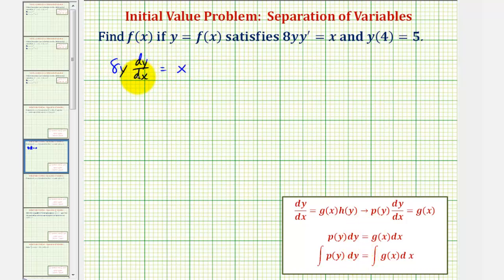So looking at our equation, let's multiply both sides by dx which would give us 8y dy equals x dx.